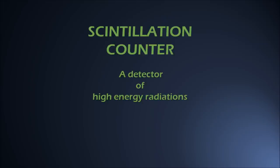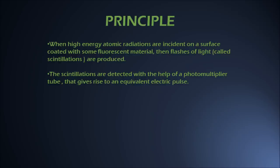Now let us see what is the principle of working of a scintillation counter. When high energy radiations are made incident on a surface coated with some fluorescent material, then scintillations — that is, flashes of light — are produced. These flashes of light are then detected with the help of a photomultiplier tube that gives rise to an equivalent electric pulse.